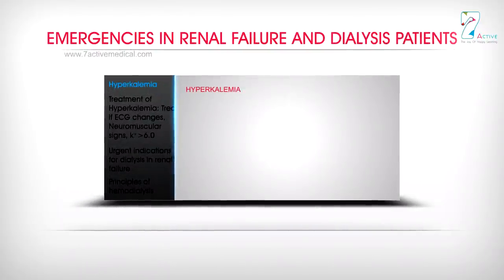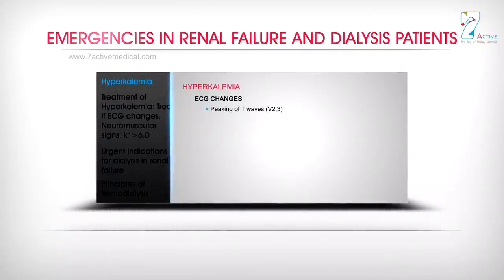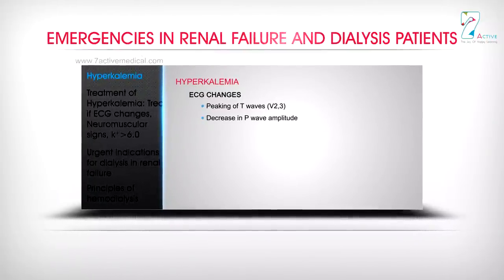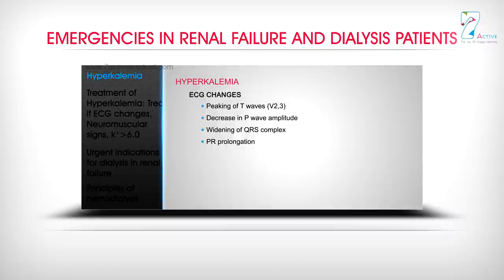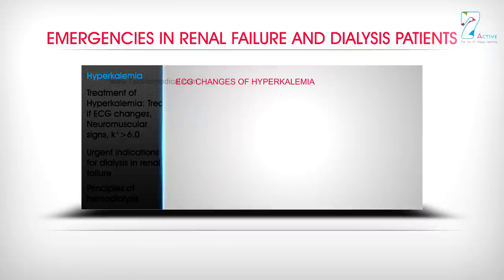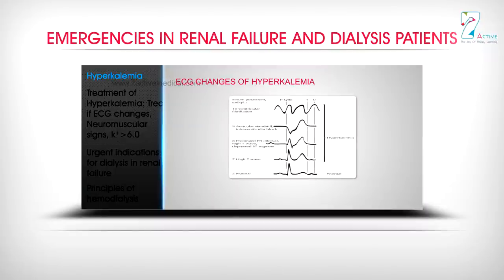Hyperkalemia ECG changes: peaking of T waves in V2–V3; decrease in P wave amplitude; widening of QRS complex; PR prolongation; left axis deviation; LBBB; sine wave pattern; cardiac arrest.